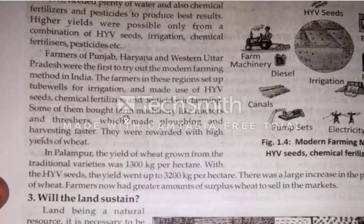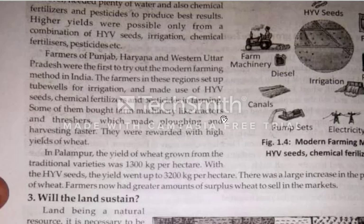Some of them also bought farm machinery like tractors and threshers, which made ploughing and harvesting faster. Machinery was also part of modern farming; they bought and used tractors and threshers for ploughing.